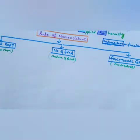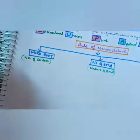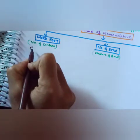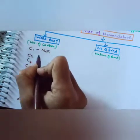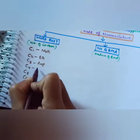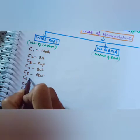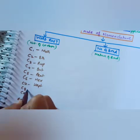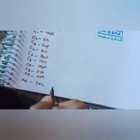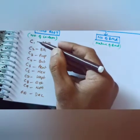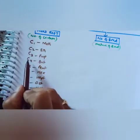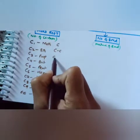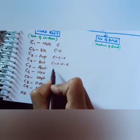Different compounds have different properties according to their nature. If there are one, two, three, four, five, six, seven, eight, nine, or ten carbons, we will use these names: one carbon is meth, two is eth, three is prop, four is but, five is pent, six is hex, seven is hept, eight is oct, nine is non, and ten is dec. You need to learn these names — C1 is meth, C2 is eth, C3 is prop, C4 is but, C5 is pent, and so on.